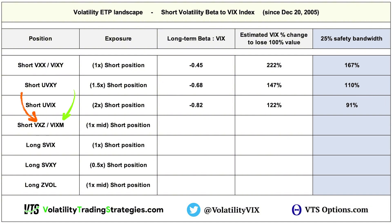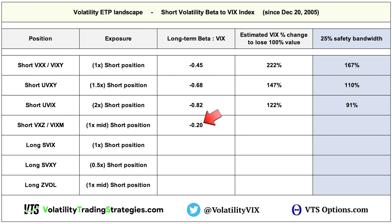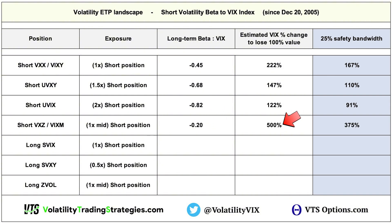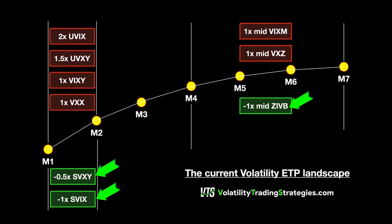Lastly among the long volatility ETPs, the VXZ and VIXM are materially the same product — ETN versus ETF. Given these are midterm futures products that move a lot slower, the beta to the VIX index is minus 0.2, so it would require a 500% VIX spike to take this short position to zero.